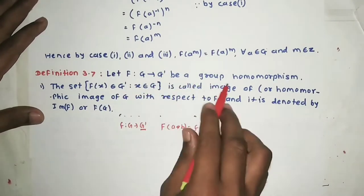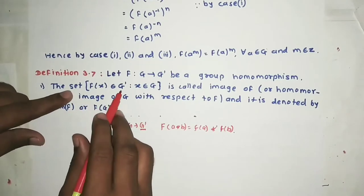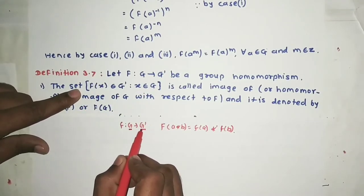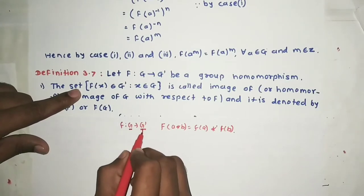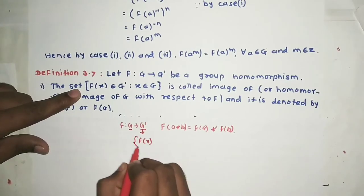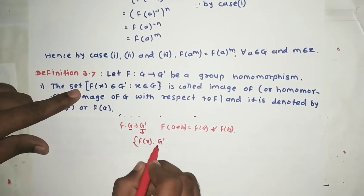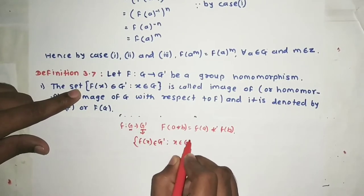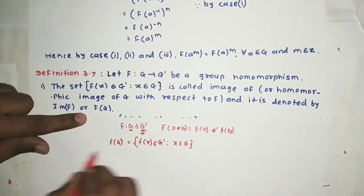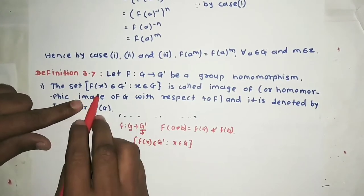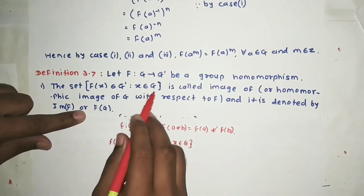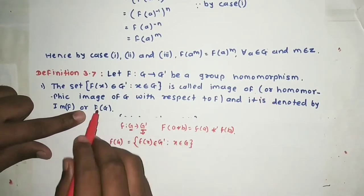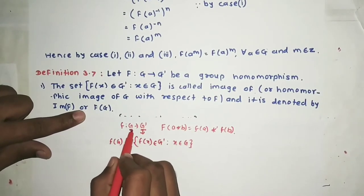Let f from G to G' be a group homomorphism. The set of all f(x) belonging to G' where x belongs to G is called the image of f, or homomorphic image of G.